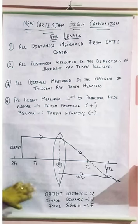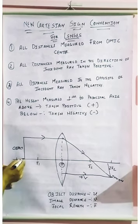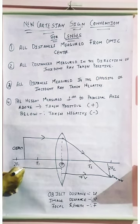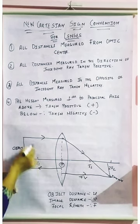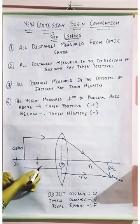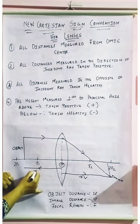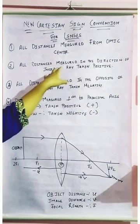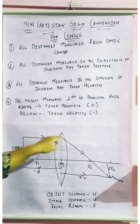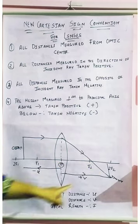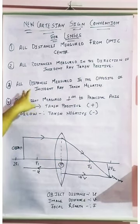If I talk about the object distance from the optic center, you can see that we are moving in the opposite direction to the incident ray. This means the object distance will be negative. Distances measured in the opposite direction of the incident ray are taken as negative.